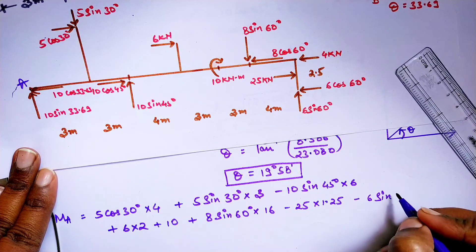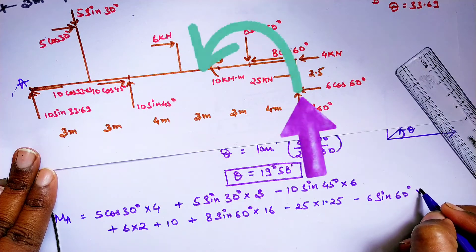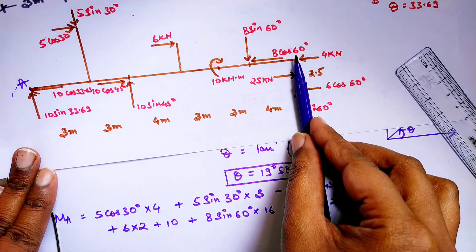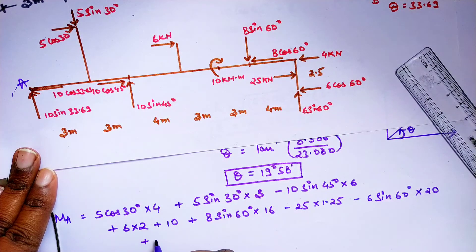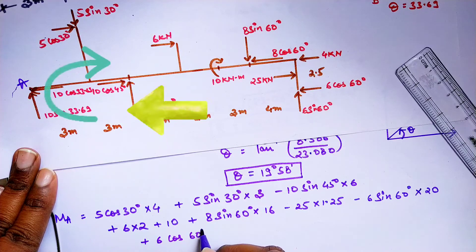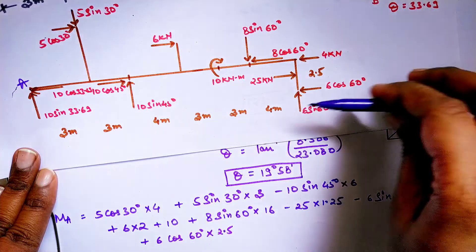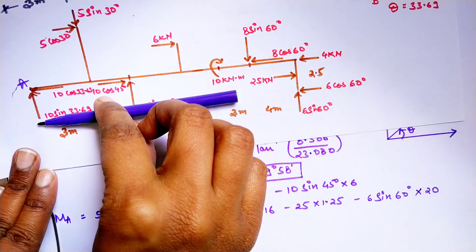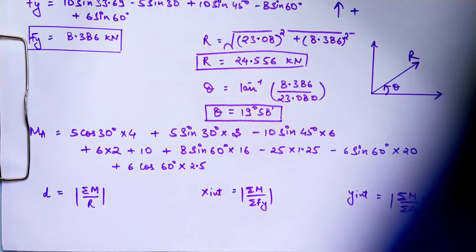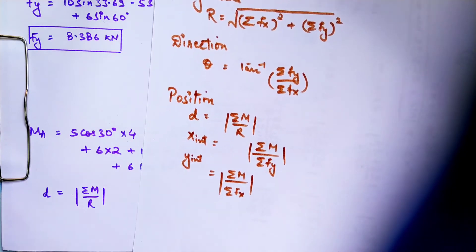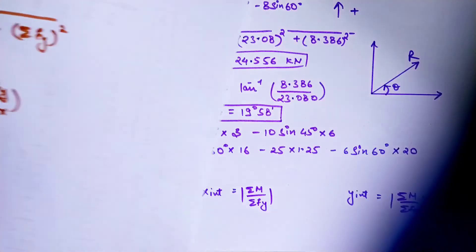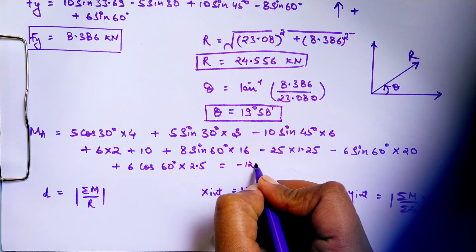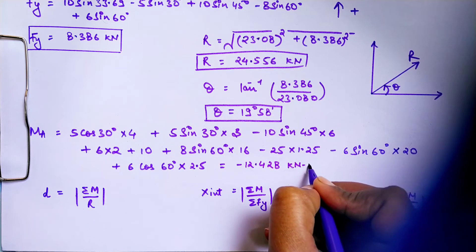The next force has a perpendicular distance of 2.5 and is going anti-clockwise. The next has a total distance of 20, and another has a clockwise direction with a total distance of 2.5. We have now identified and calculated all the moments. Simply put everything into the calculator and find the final result. For any force you are confused about, extend it towards A to identify the perpendicular distance. Use the position formulas — ΣMA is already set up. Calculate and find the final answer.